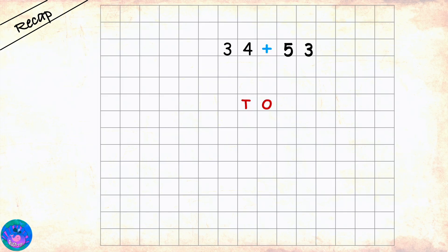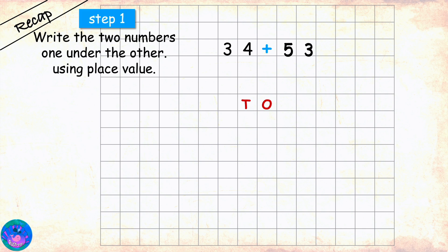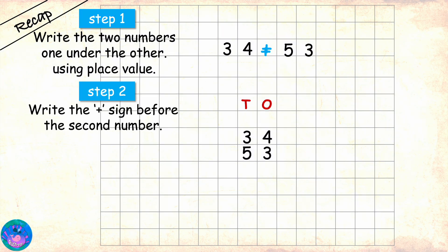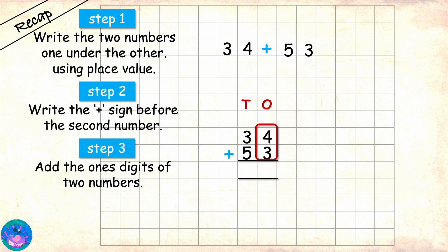For example, if we need to add 34 and 53, step 1 is to write the numbers one under the other using place value. Here is the first number 34 and 53 under it. Step 2 is to write the plus sign before the second number and mark the areas for the answer. In step 3, we add the digits in the ones place. We have 4 and 3. 4 plus 3 equals 7, which we will write as the answer for ones place.